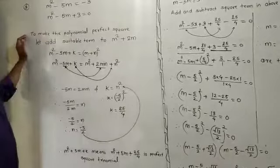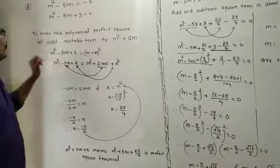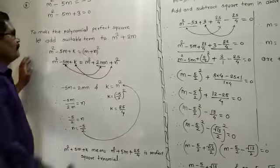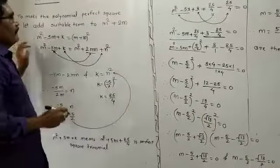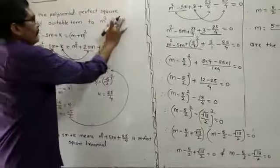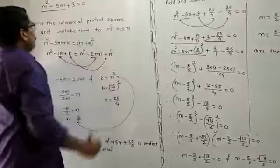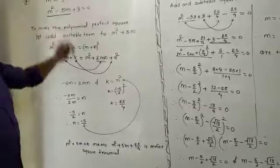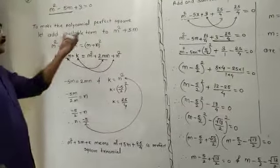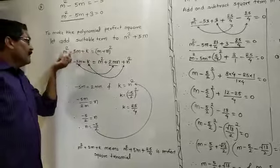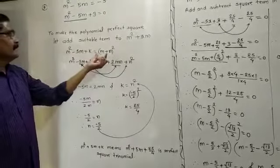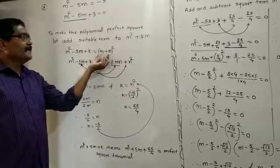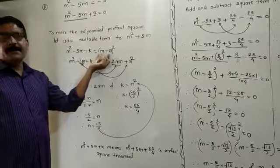To make the polynomial a perfect square, let's add a suitable term to the first two terms. You have to add a suitable term to m squared minus 5m. I will add k to m squared minus 5m. At that time, this polynomial m squared minus 5m plus k becomes a perfect square.